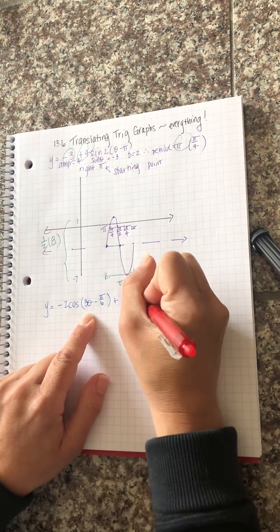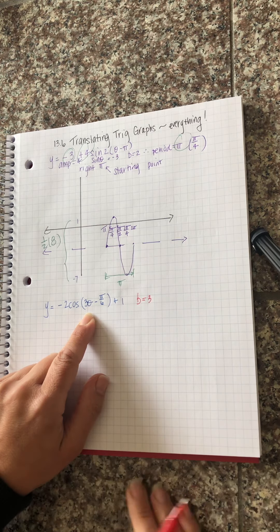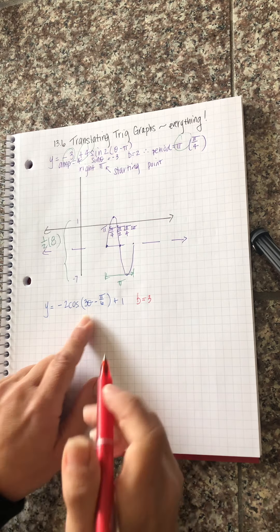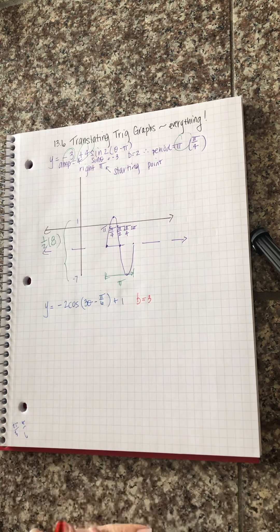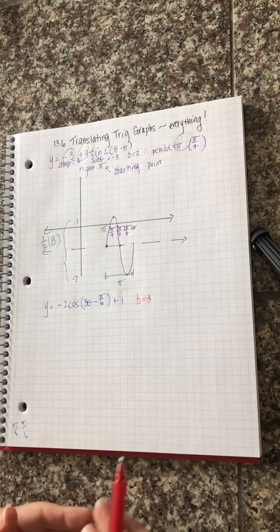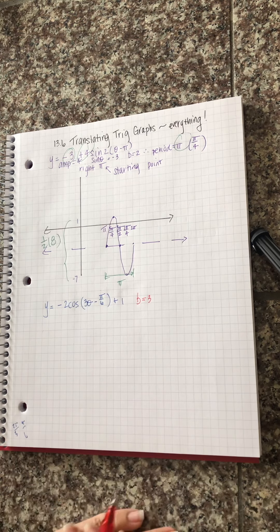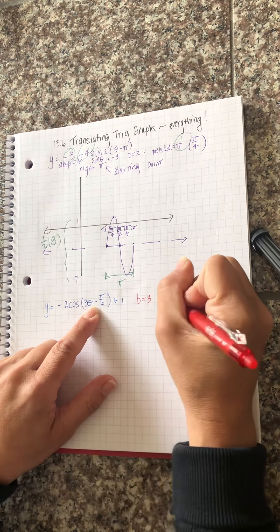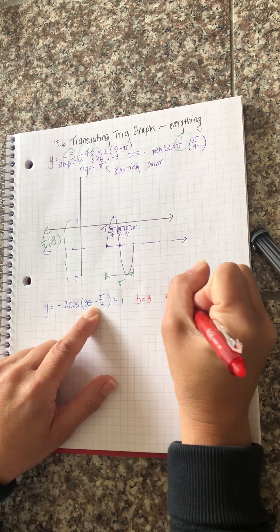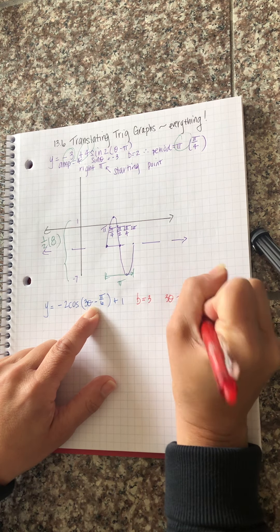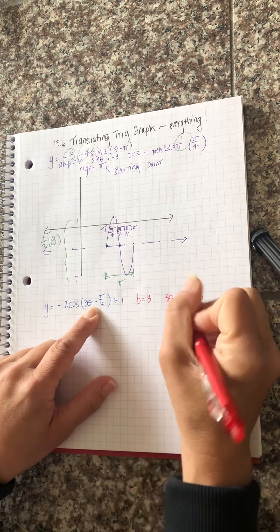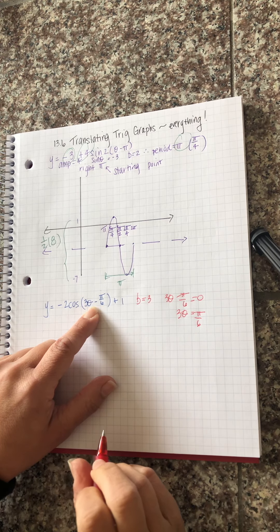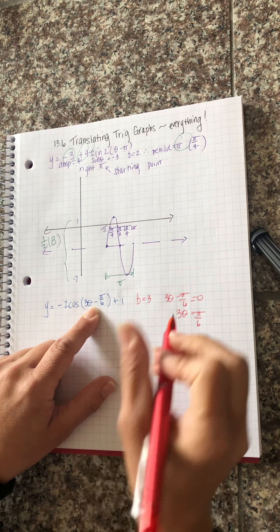So B is three. B is the coefficient on theta. Whenever we do shifts I've always asked you what value of x makes the quantity equal to zero because that's going to give you the shift. If I set three theta minus pi over six equal to zero, add pi over six to both sides, divide by three and you get pi over 18.